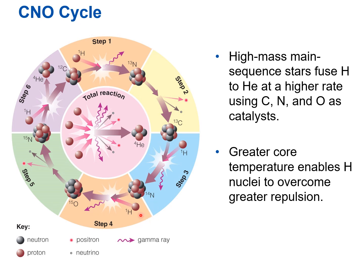Nitrogen-14 fuses with hydrogen-1 to become oxygen-15, which is very short-lived with a half-life of about two minutes — it's used in medical PET scans. It quickly decays to nitrogen-15. Another hydrogen fuses with the nitrogen-15, producing carbon-12 and kicking off a helium nucleus — an alpha particle — completing the cycle back to carbon-12, which can then meet another hydrogen to start again.